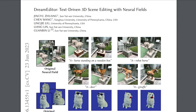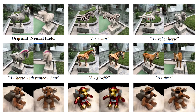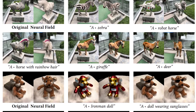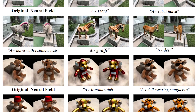Up next, we have DreamEditor — a text-driven 3D scene editing research with neural fields. It lets you edit 3D scenes with just a text prompt. While text-to-3D is still in the early stage, this is like the early solution for text-based image editing back when text-to-image started to take off. It's also interesting how NeRF is converging with 3D and text synthesis research this much. If you want to learn more about the latest NeRF developments, check out this recent video of mine.